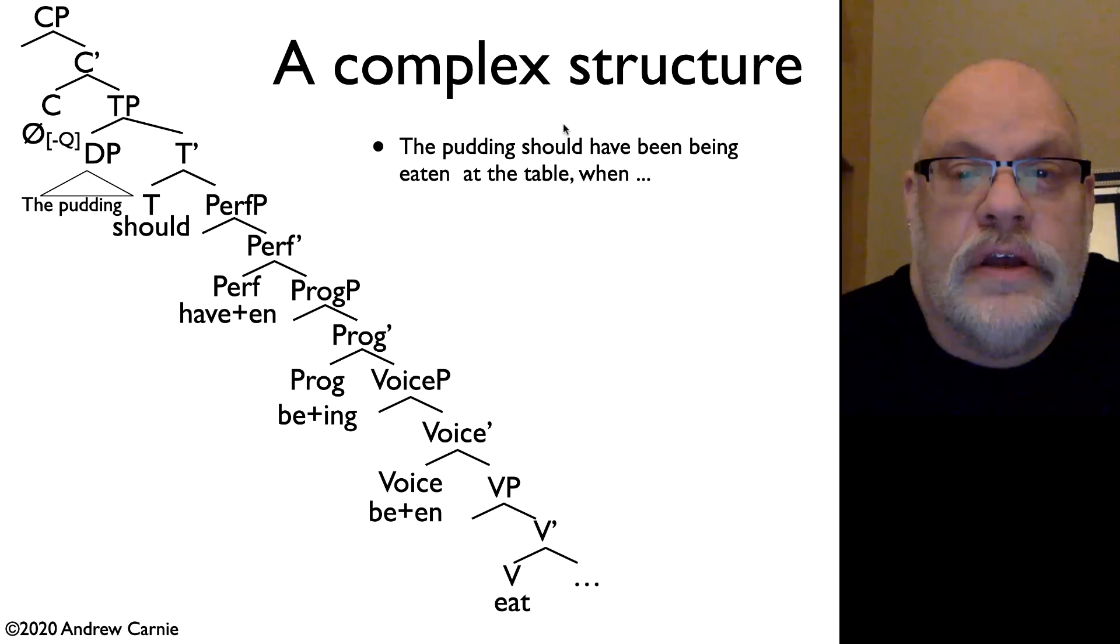So what do we have? We have the modal should. We have have, which when combined with the participle, gives us the perfect. In order to make that work, we're going to put have plus the perfect marker here under the perfect head, and we're going to do affix lowering of the -en onto the be, making it into the participial form. So that's have and -en form the perfect.